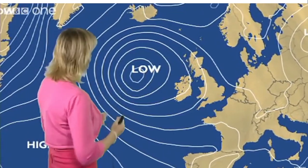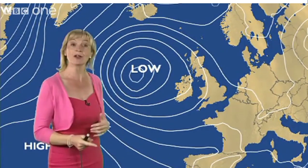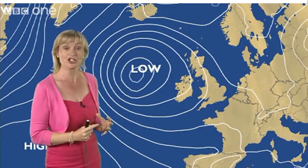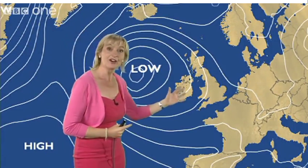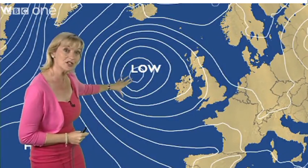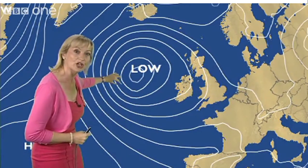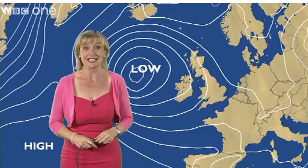Something else you'll spot on this chart are the white lines - these are the isobars and they join places together of equal pressure. You can see that where the isobars are quite well spaced, the wind strength will be a lot less than over the Atlantic where the isobars are close together. The closer the isobars are together, the windier it's likely to be.